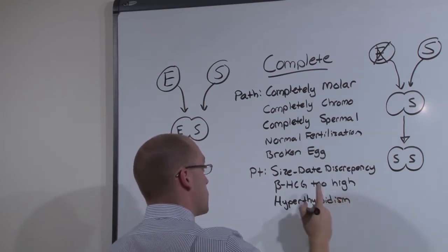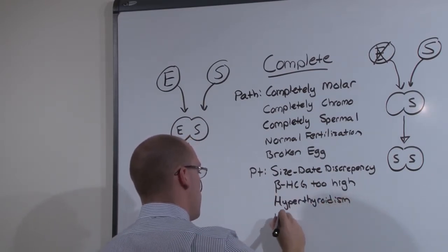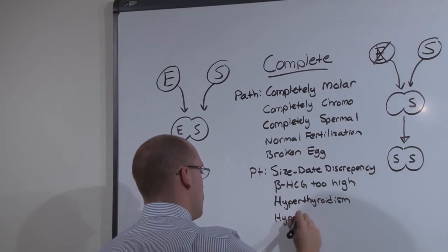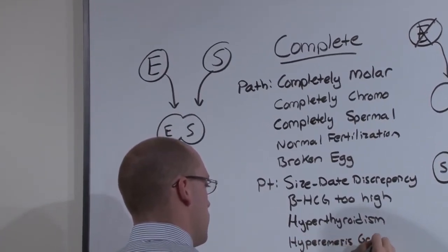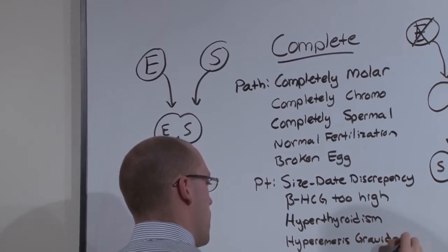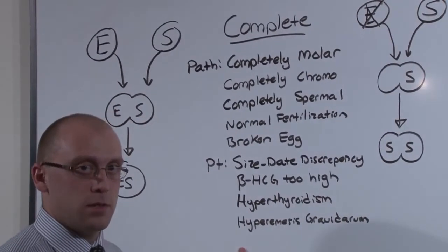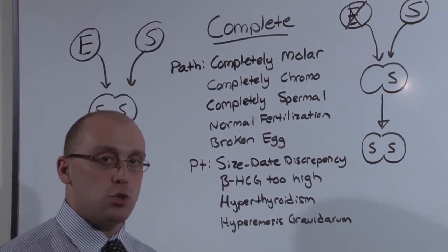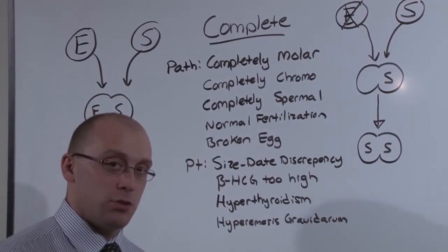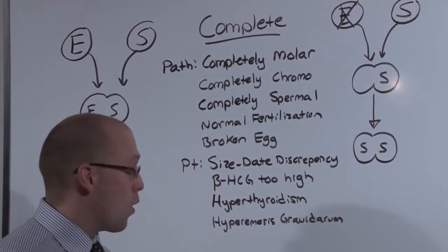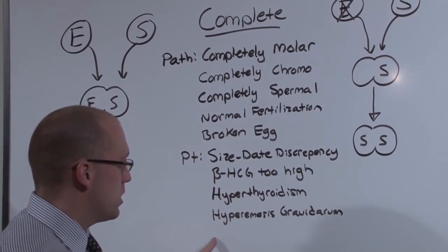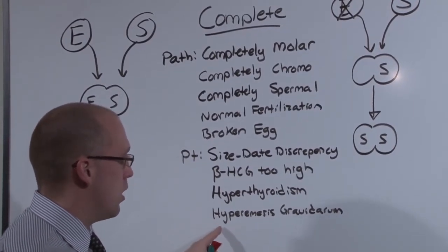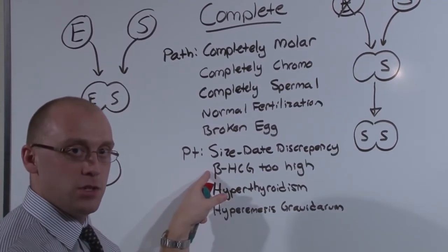You should also suspect a complete mole in someone who has hyperemesis gravidarum. Hyperemesis gravidarum is like morning sickness, but it's morning sickness that's too severe. It causes dehydration, decreased PO intake, or that lasts into the second trimester. It's not just morning sickness, it's super morning sickness, and it is caused by the elevated beta-HCG.